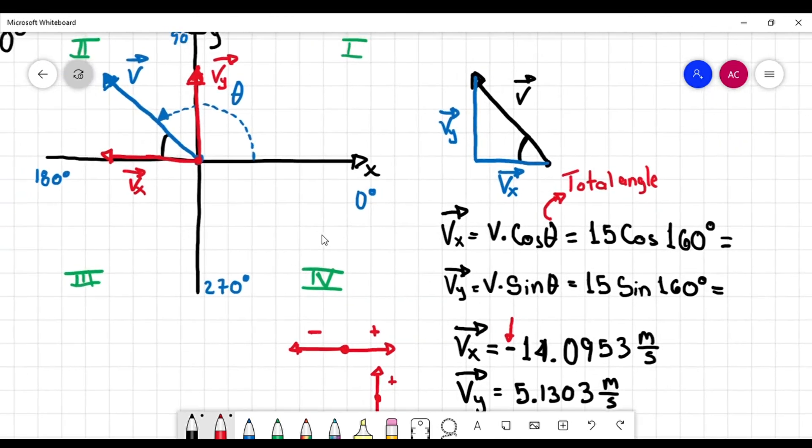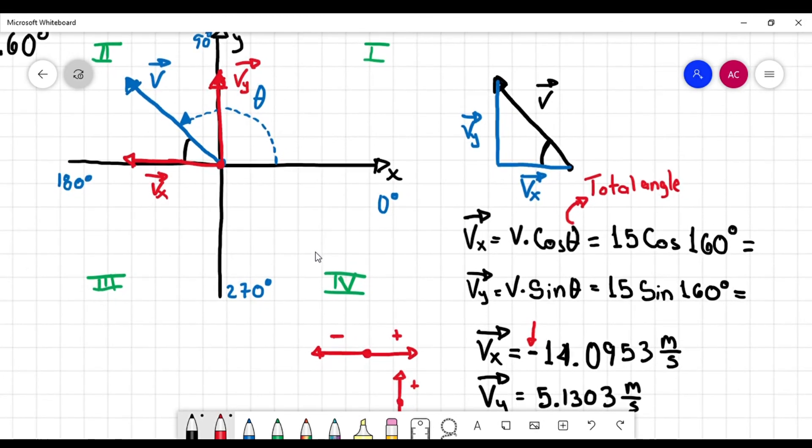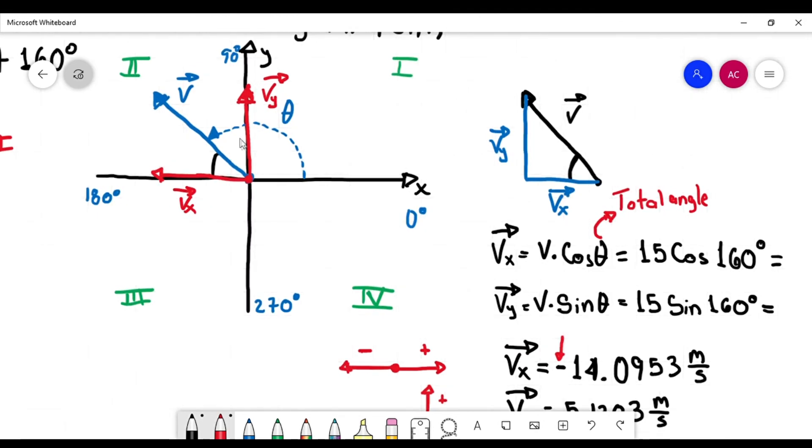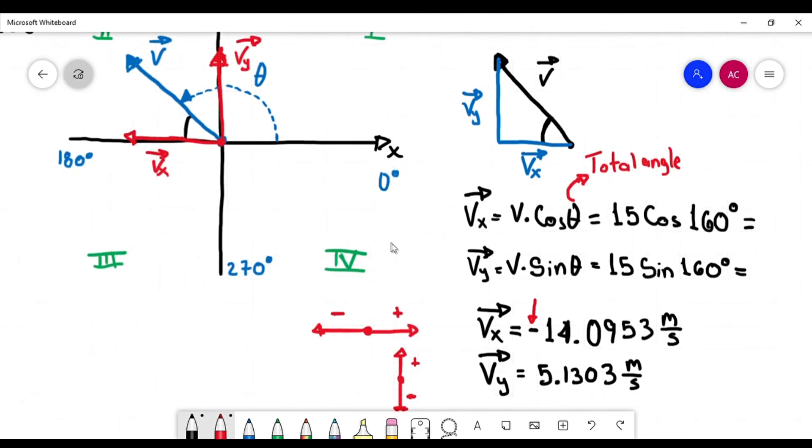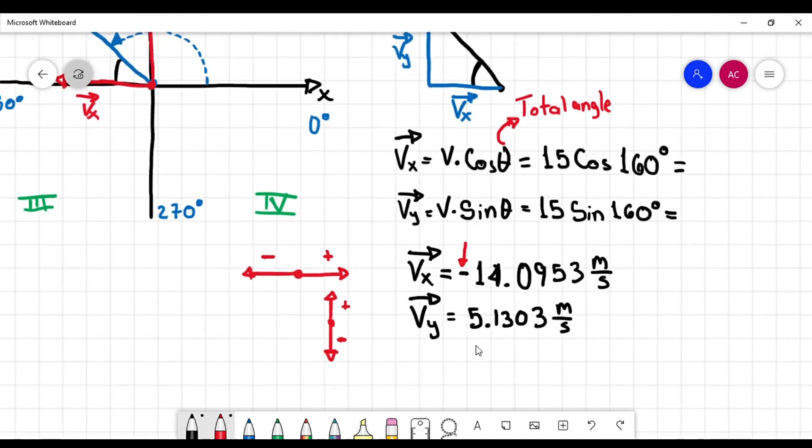So take a look at the drawing. If you see Vx goes to the left. That's right. That's why it's negative. And Vy goes upwards. So that's why Vy is positive.